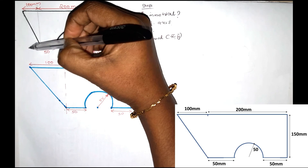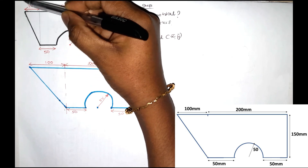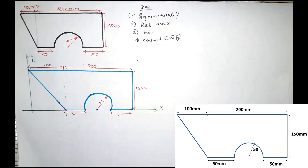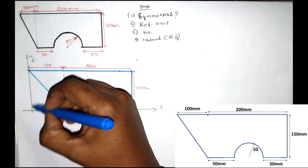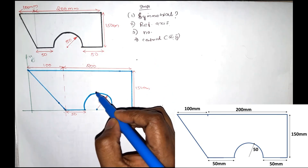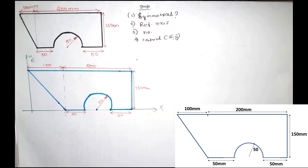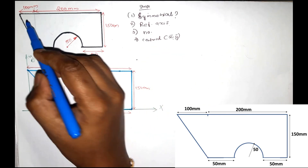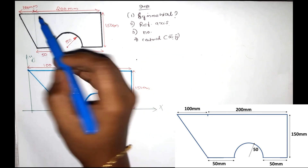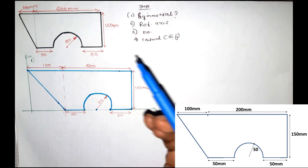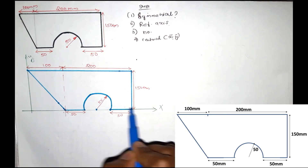We set the reference axis to the X axis. We will mark the Y axis. This is the X axis. We will mark the Y axis. We will divide the number in sections.